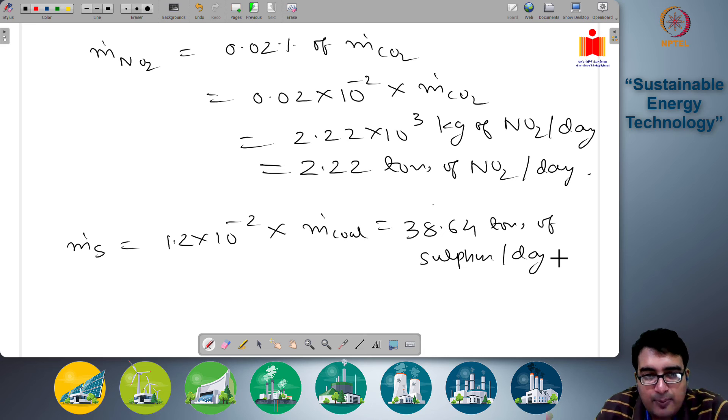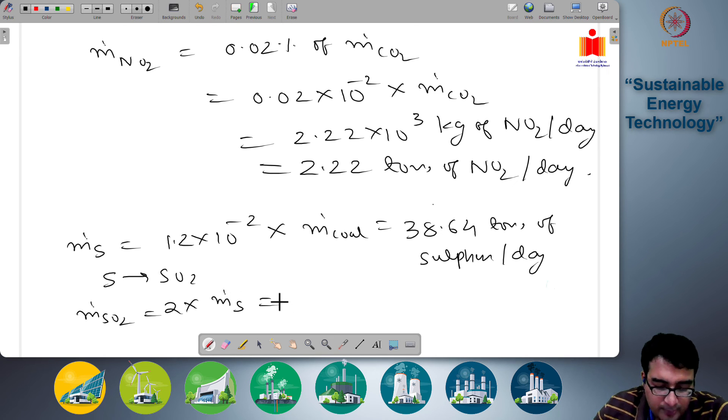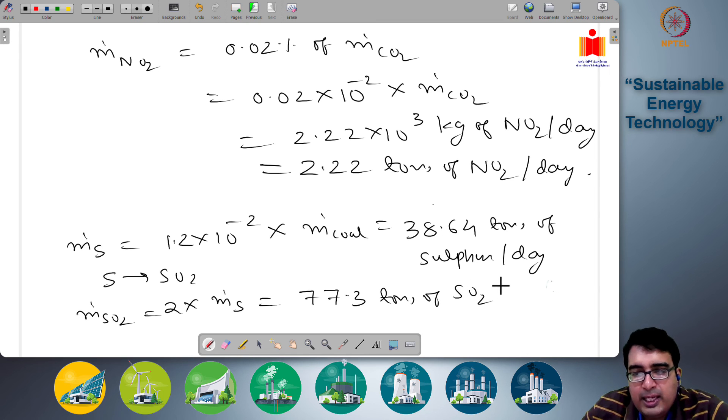Now when it comes to sulphur, 32 kg of sulphur produces 64 kg of SO2. So S goes to SO2, this is 32 kg, this is 64 kg. So m dot SO2 is basically 2 times m dot S, which becomes 77.3 tons of SO2 being emitted per day.